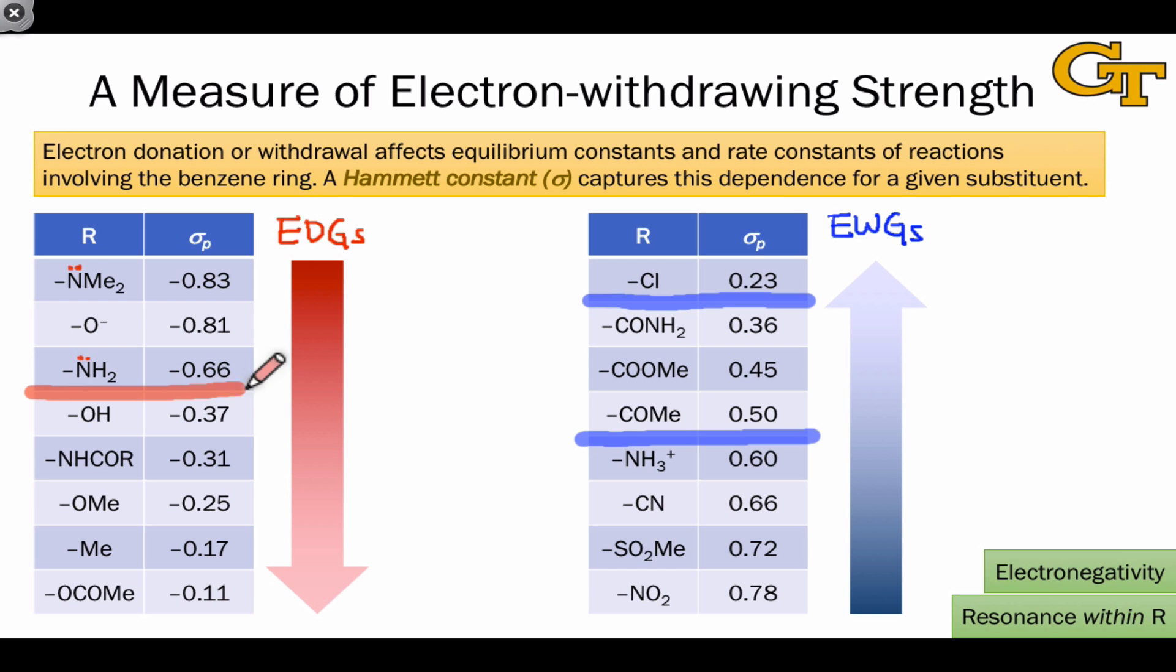Moderately-donating substituents is pretty much any hetero-atom, and then your weakly-donating substituents are going to be the ester, which is this uniquely deactivated oxygen, and any alkyl substituents with relatively low sigma p-values.